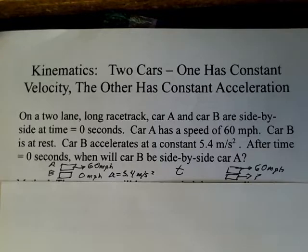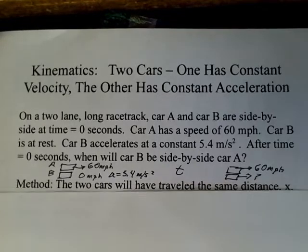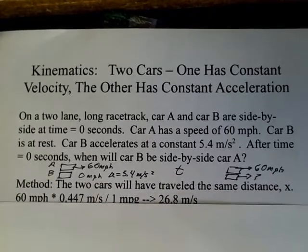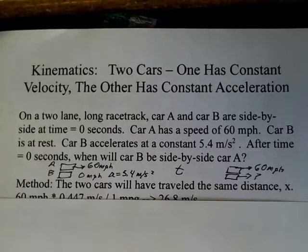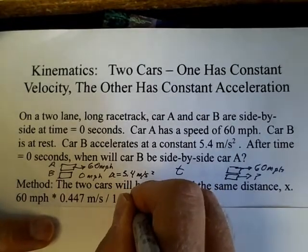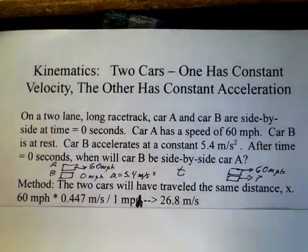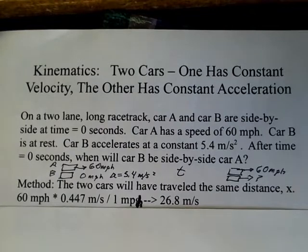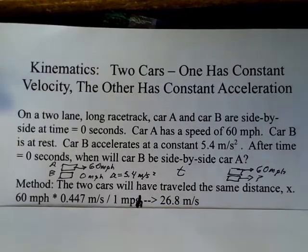The question is how much time is going to elapse before they're side-by-side. So we can solve this by noting that if they're side-by-side again, they've traveled the same distance. In kinematics, we have some equations that describe the distance traveled as a function of time. I want to work in the metric system. So we convert the 60 miles an hour into meters per second. 0.447 meters per second is one mile per hour. So 60 miles an hour converts to 26.8 meters per second.